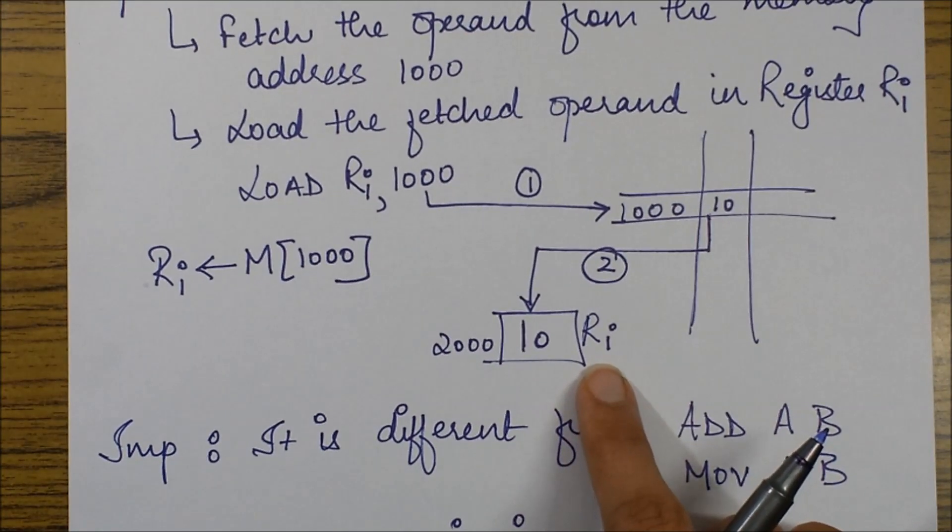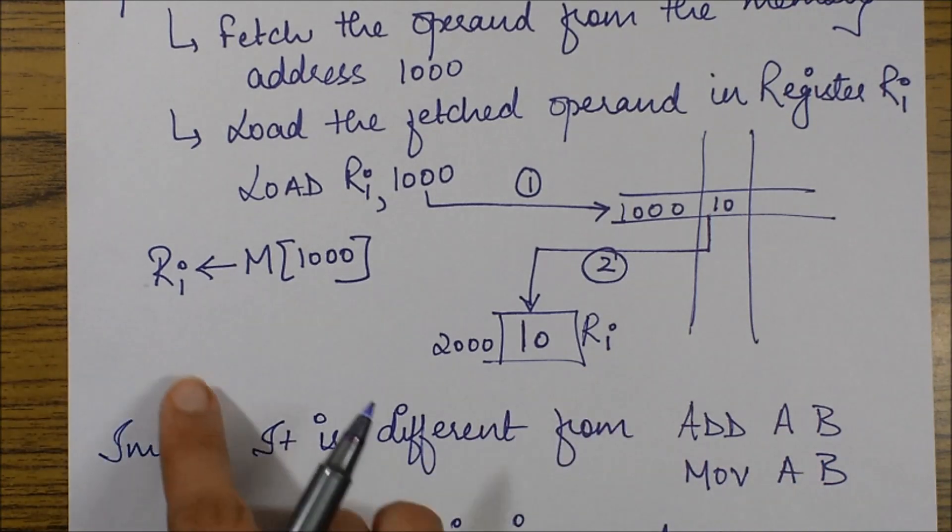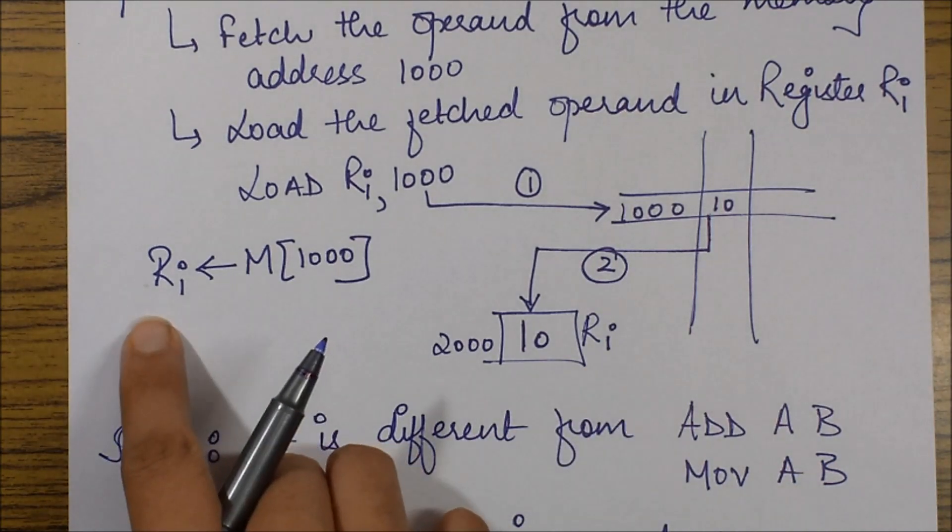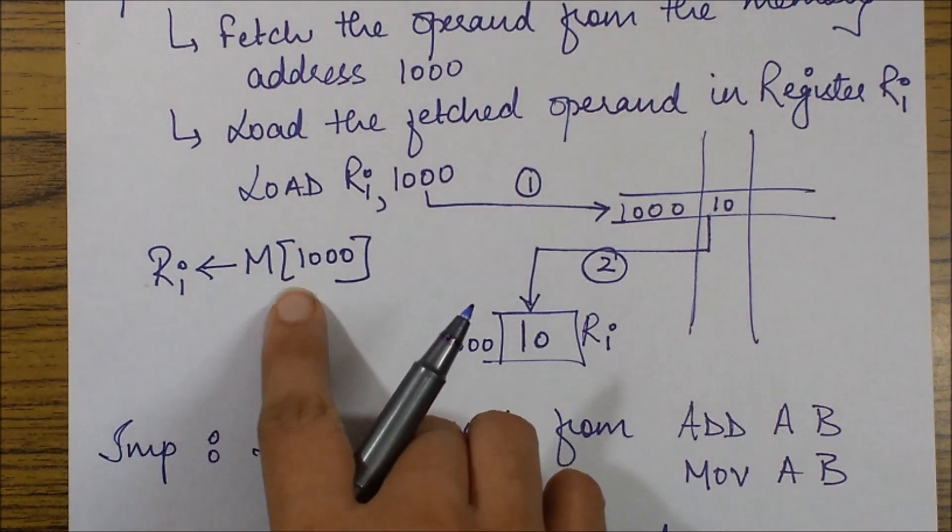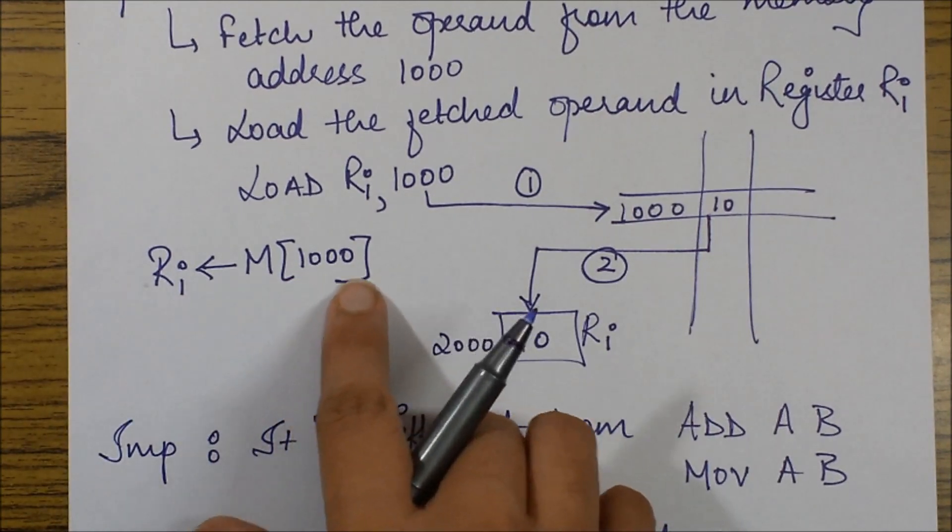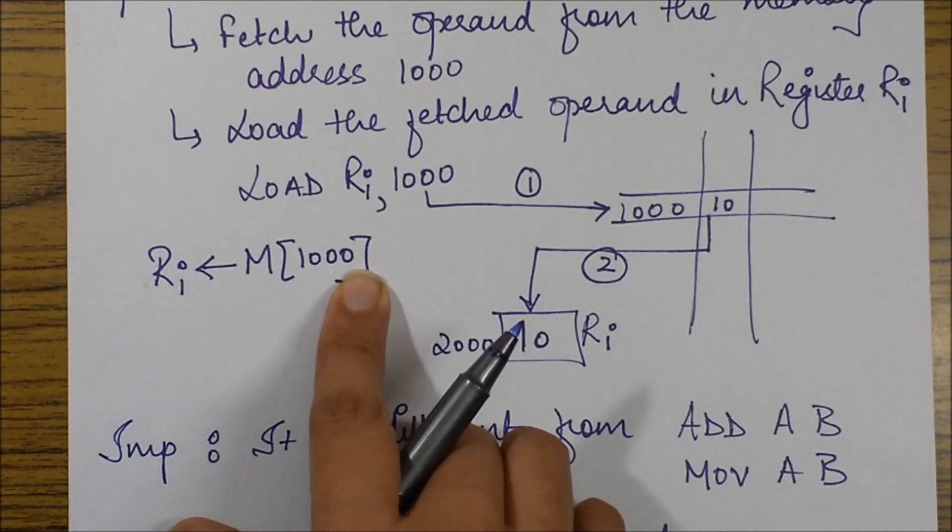So the consequent procedure, if I write it in the form of instructions, it would be like this: I am loading my RI register with the memory contents present at address 1000.